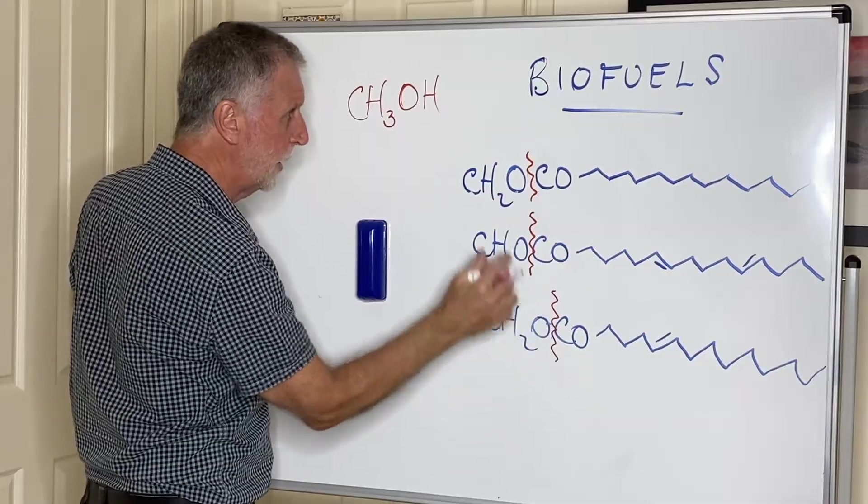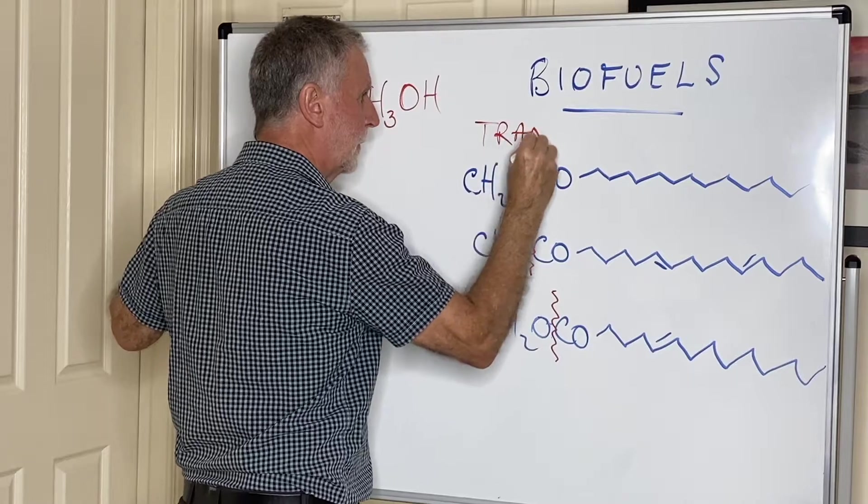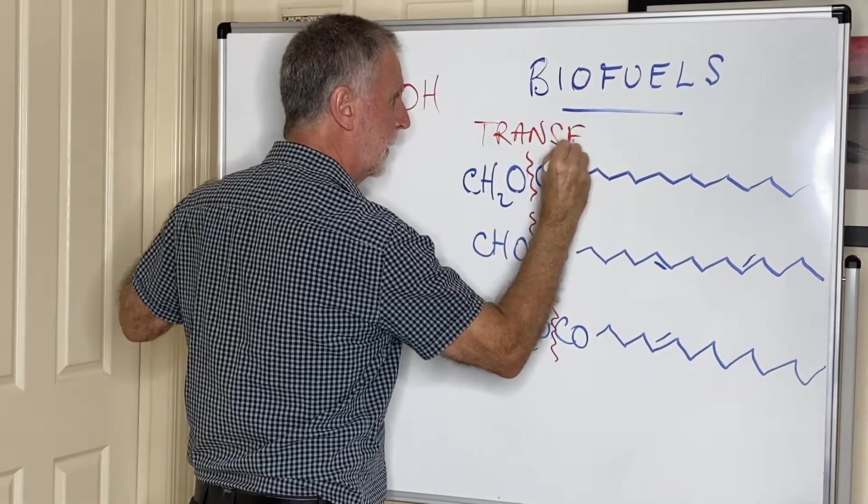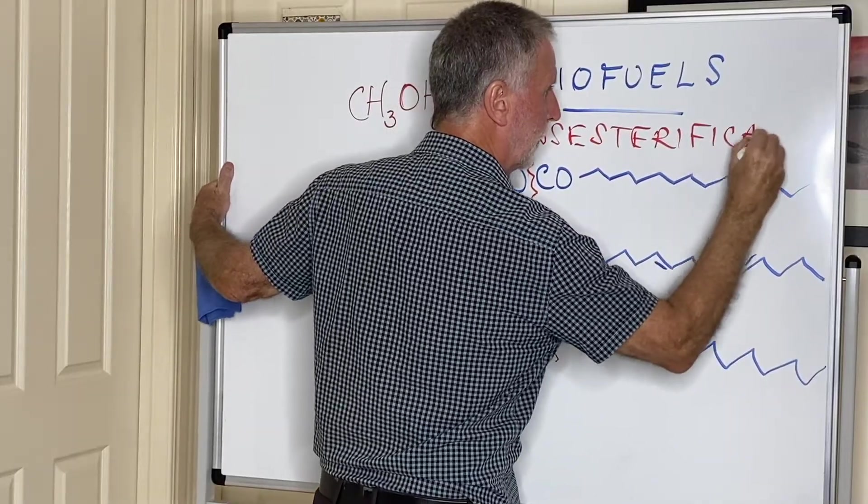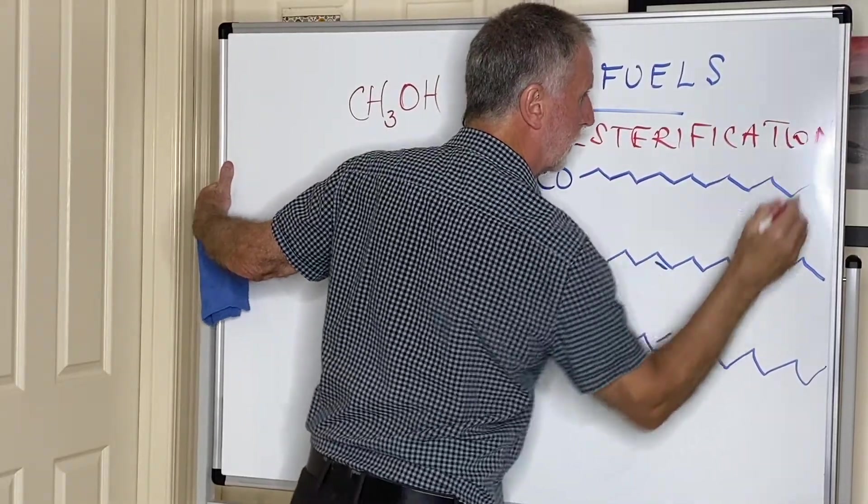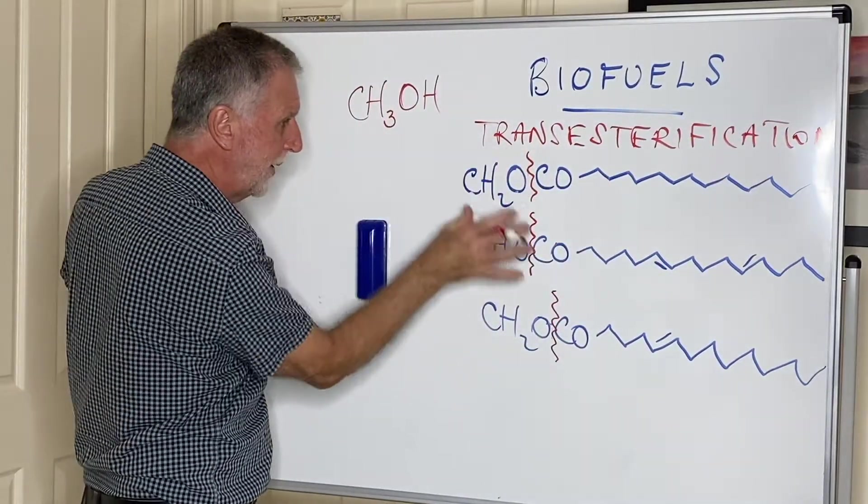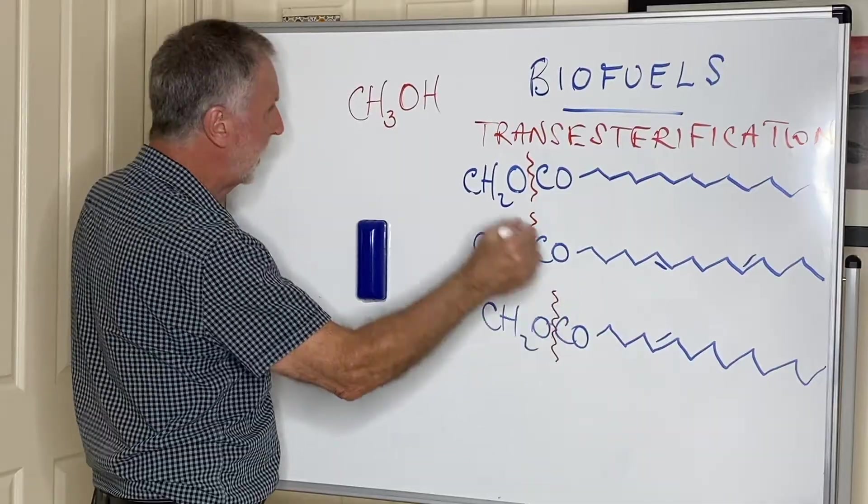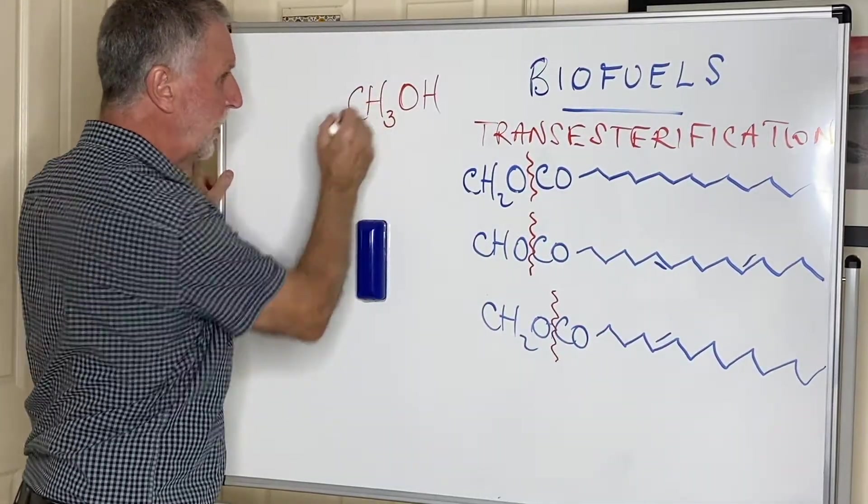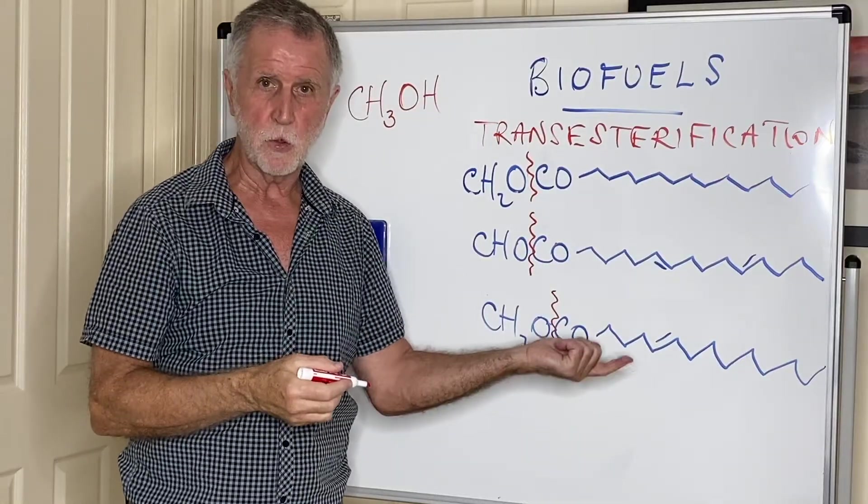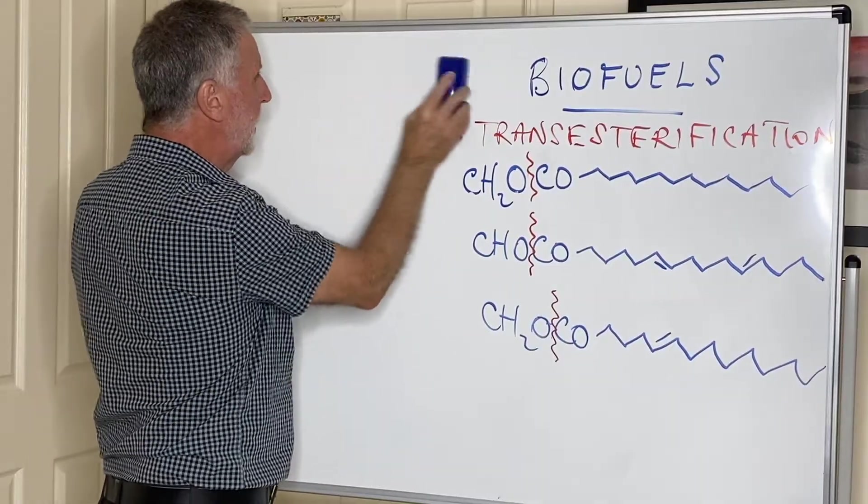Incidentally, the name given to the changeover from the triester to the methyl ester of each individual chain is called—it's quite a long word but it makes sense—transesterification. Transesterification is turning one ester, the big figure E ester, into three separate esters using methanol in the hydrolysis process. The second biofuel we need to know about is probably more familiar to you, and that is ethanol.